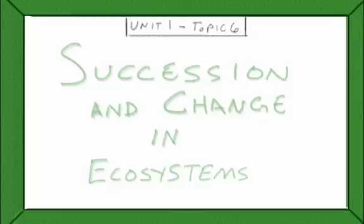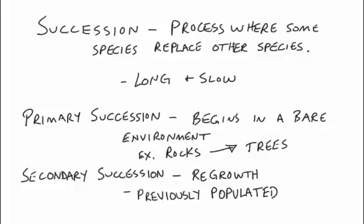Topic six is about succession and change in ecosystems. Succession is simply a process where species replace other species — the ecosystem kind of evolves. It's a really long and slow process.